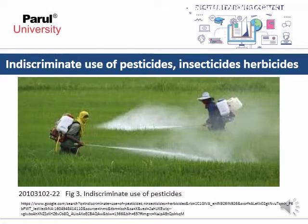Indiscriminate use of pesticides, insecticides, and herbicides is a concern. The image shows individuals spraying pesticides on crops to control pests without concern for atmospheric contamination.